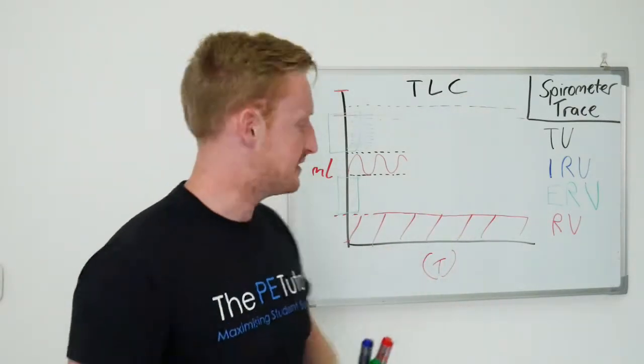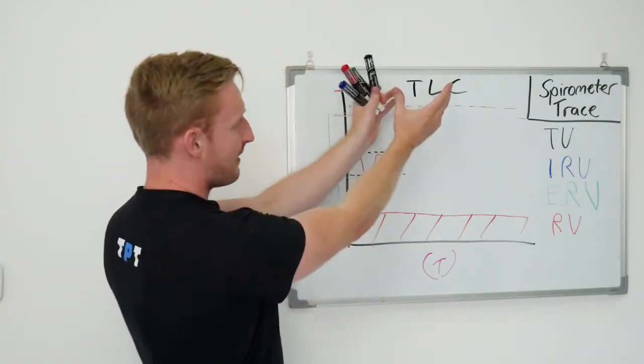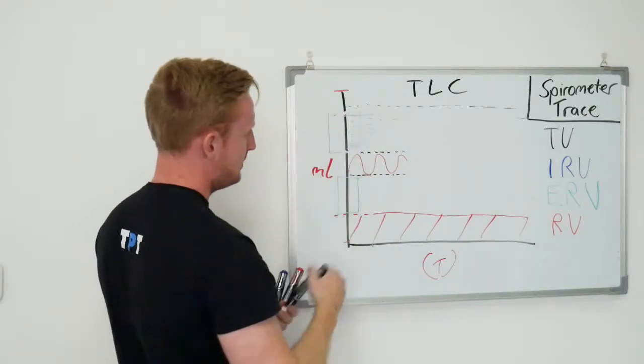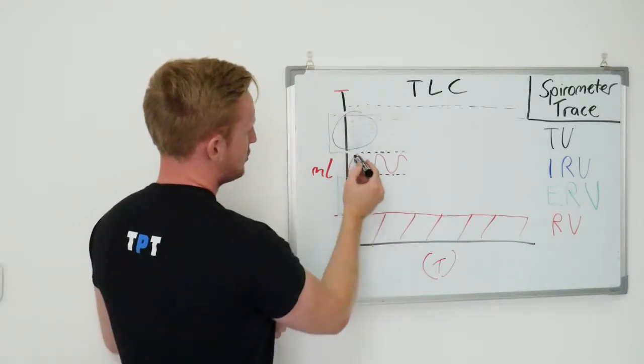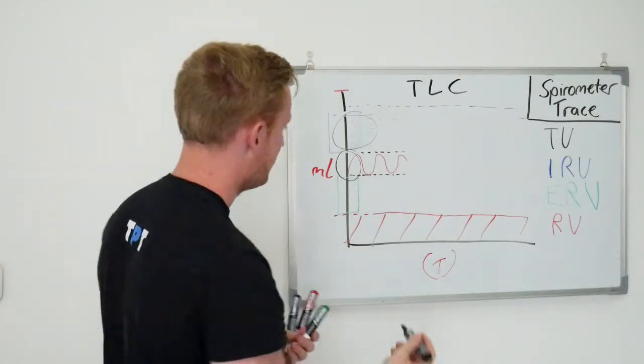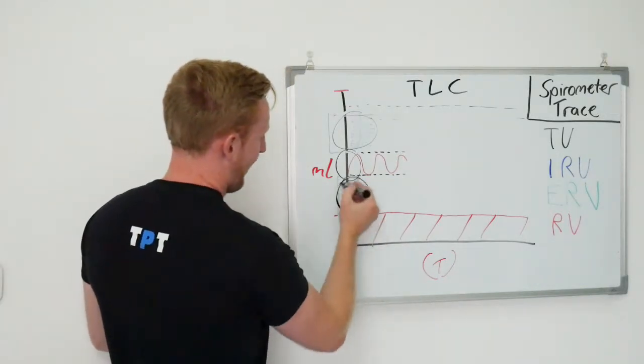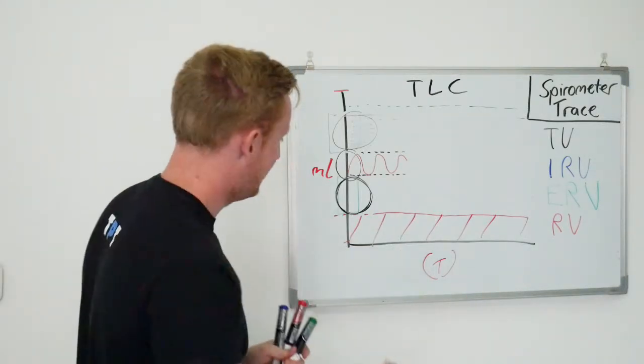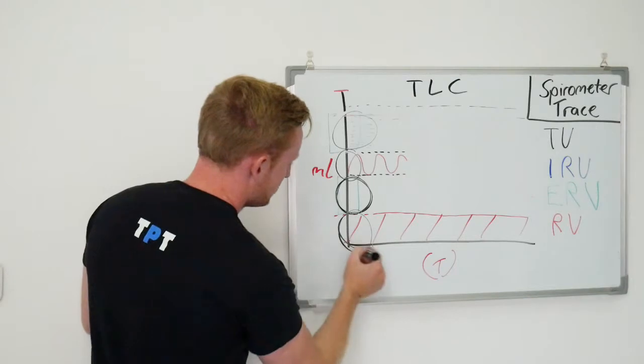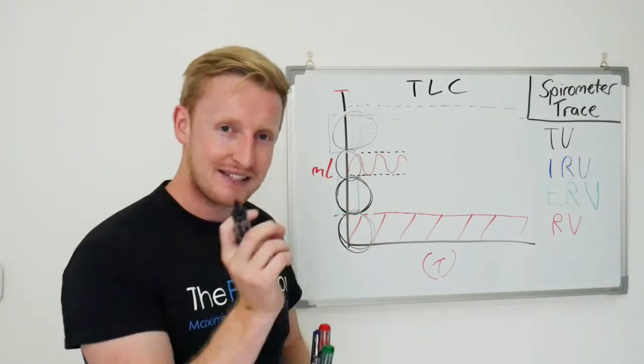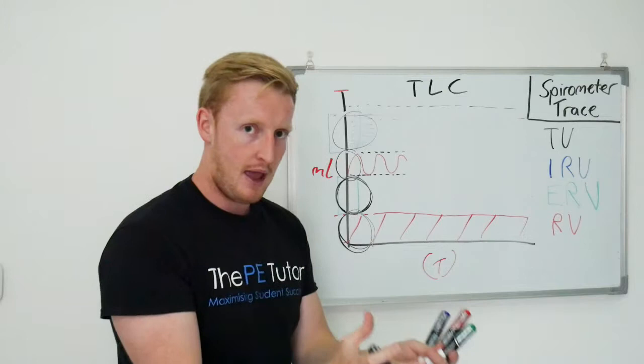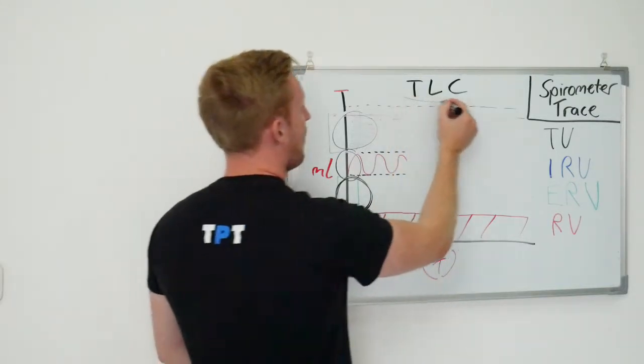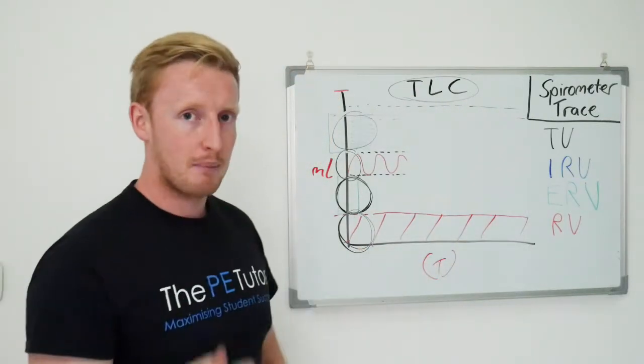Our total lung capacity. The way we calculate that figure is by adding our inspiratory reserve volume space. We add that to our tidal volume, our normal breath in or normal breath out. We add that to our expiratory reserve volume, how much we can exhale after a normal exhalation. And then we add that to our residual volume, how much air is left in our lungs following a maximum exhalation. If we add all of those volumes up, we arrive at our total lung capacity.